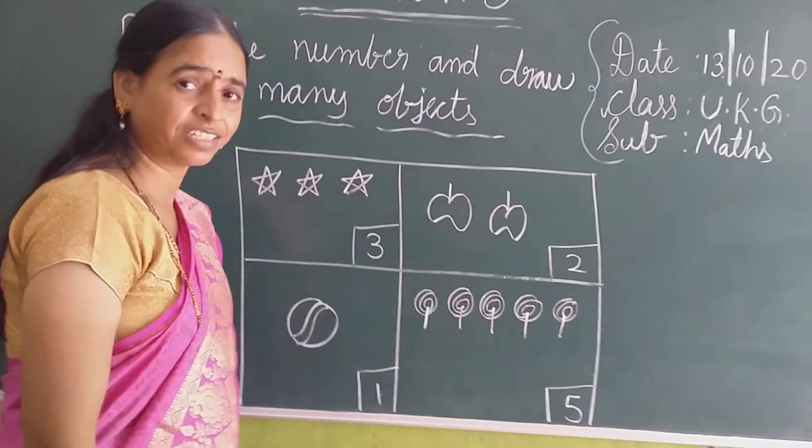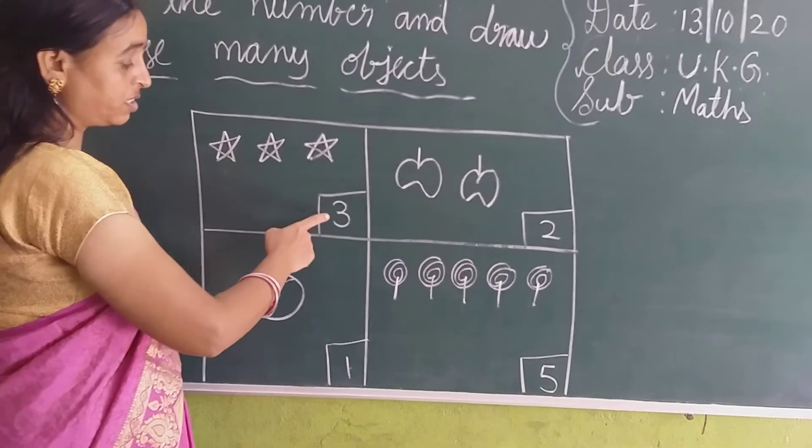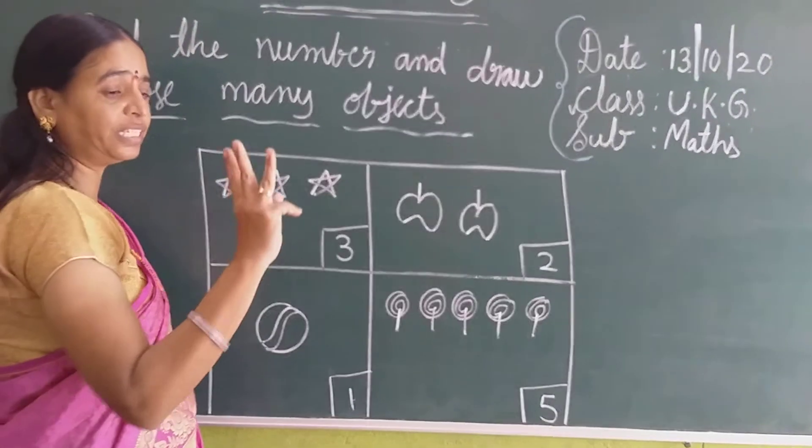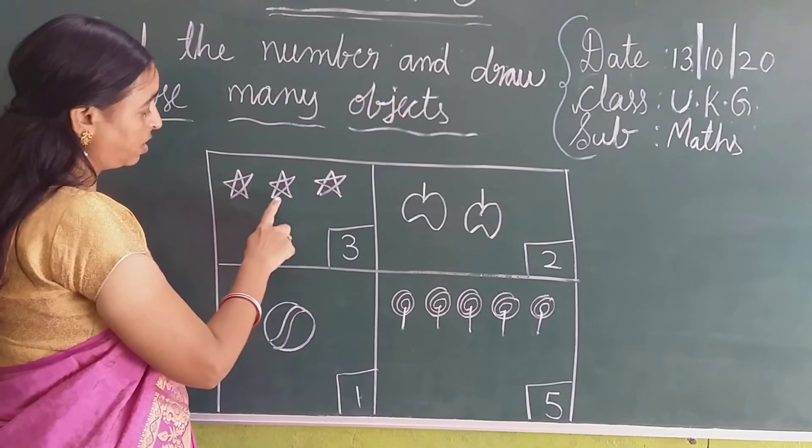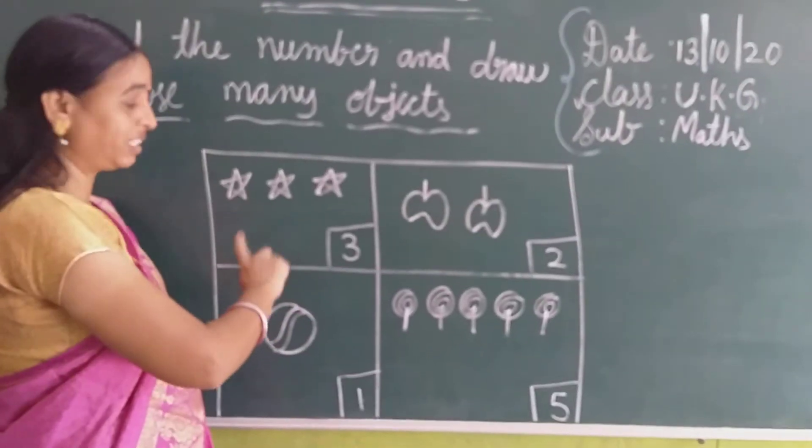Is it correct? Look at here and count again. What is the number? Number 3. So count 1, 2, 3. Correct.